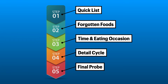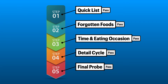The five steps of the automated multiple-pass method include the quick list, forgotten foods, time and eating occasion, the detail cycle, and the final probe. Each step represents a single pass. Thus, the interviewer starts with an initial gathering of foods and beverages consumed, and then goes back four more times for additional information.